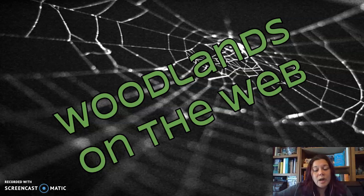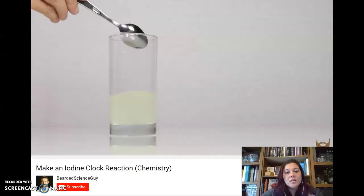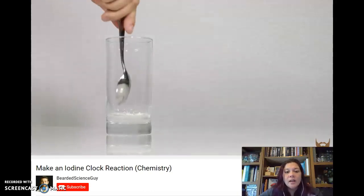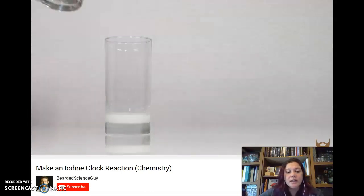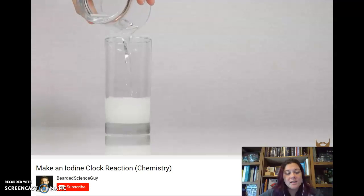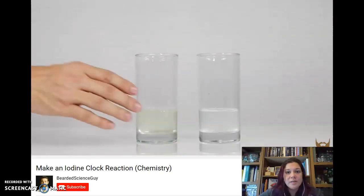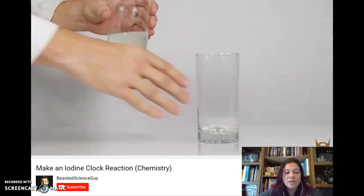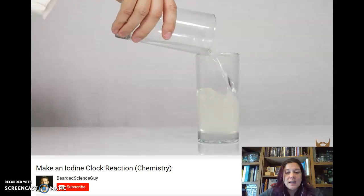In this episode of Woodlands on the Web, we'll be looking at the kinetics of iodine clock reactions. The iodine clock reaction is a really classic reaction to look at kinetics because it doesn't change color until all of one of the reactants is used up. When that happens, that allows you to really easily measure the amount of time it takes and therefore figure out the rate at which that reaction occurs.